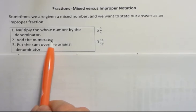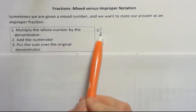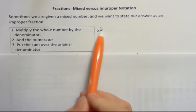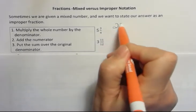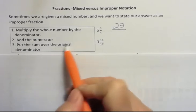We're going to multiply the whole number by the denominator and then add the numerator. That's going to become our new numerator. So 5 times 4 is 20 plus 3 is 23. And then the denominator stays the same.